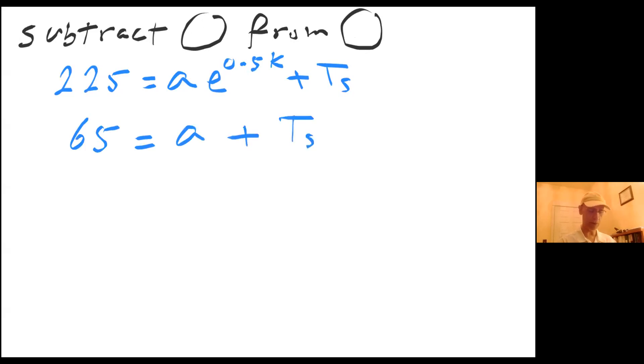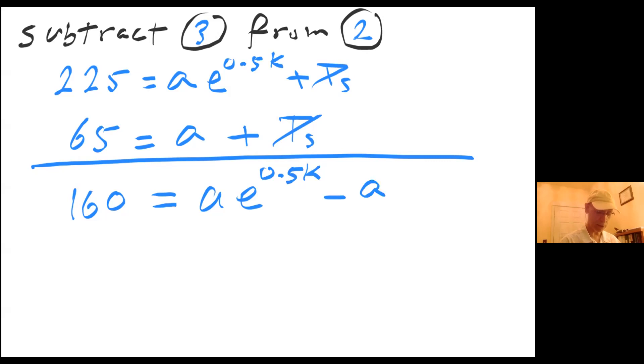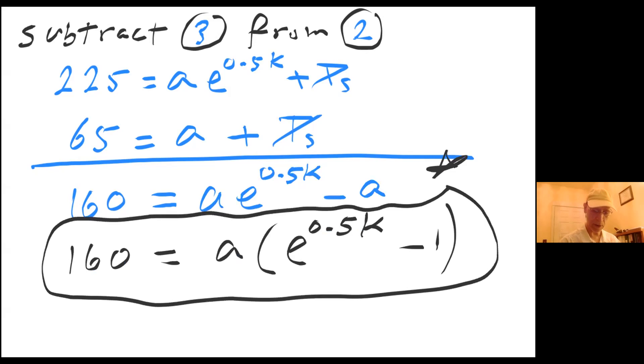So what I'm going to do, I'm going to subtract three from two. And now if I do that, I get 160 equals, T_s cancels out if I subtract, and I'm left with A times e^(0.5k) minus A. And again, I can factor. So 160 equals A times (e^(0.5k) minus 1). And I'm going to go ahead and name this one star star.